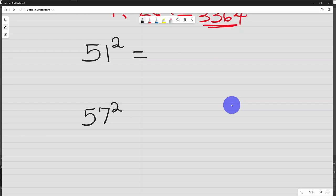Now, 51 square, half of 50 is 25. 25 plus this one is 26. One square is 1. So write it as 01. This is the answer.